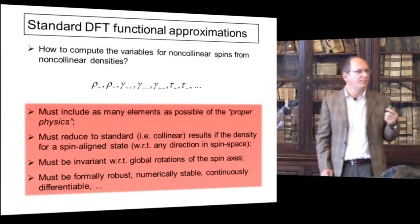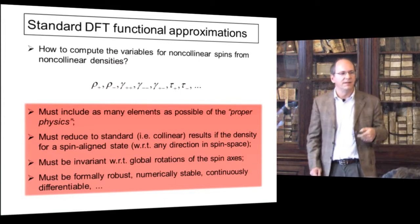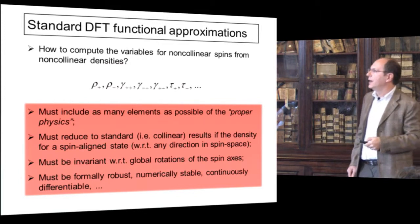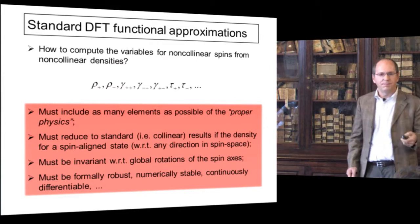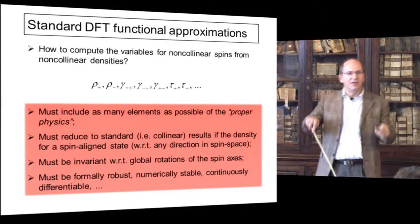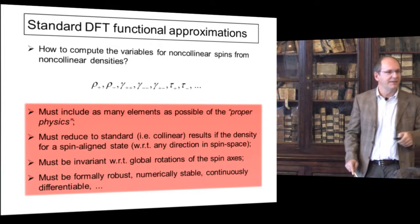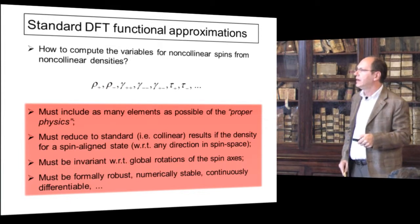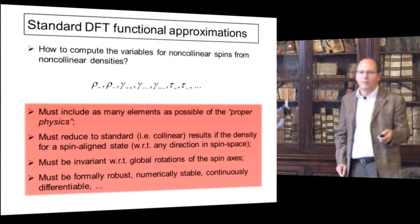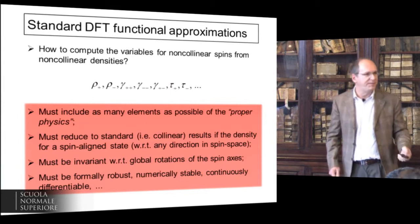We must try to include as many elements of the proper physics as possible. We need to ensure that all the standard collinear results are reproduced seamlessly with respect to any arbitrary axis of quantization in spin space, which means it must be completely invariant with respect to rotation in spin space. And of course we want a formally robust, numerically stable, continuously differentiable approach.